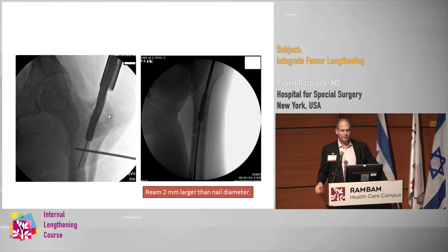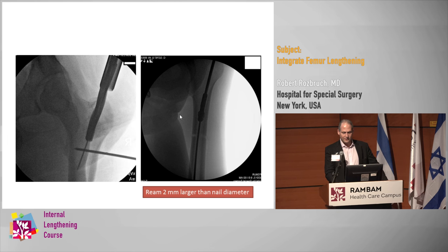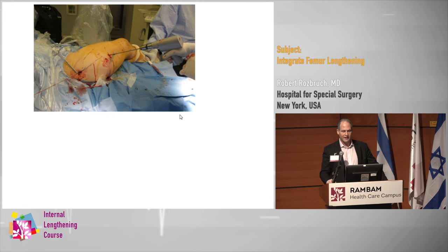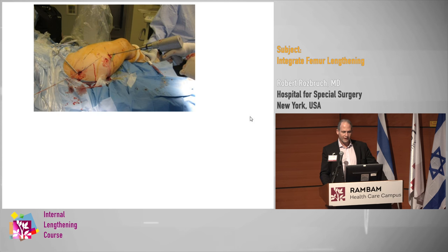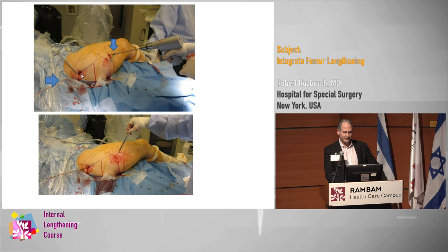My entry point: I typically use an ACL reamer, like an acorn reamer — very, very small. You don't even have to use a soft tissue protector, and then you start reaming. I do ream about two millimeters wider than the nail. This is what it looks like — the drill holes, you can see the entry point, very small incisions, the guide wire, the drilling, and the incision.